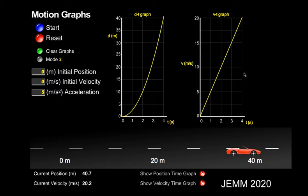The rise is 20, the run is 4, and 20 divided by 4 is 5 meters per second per second.